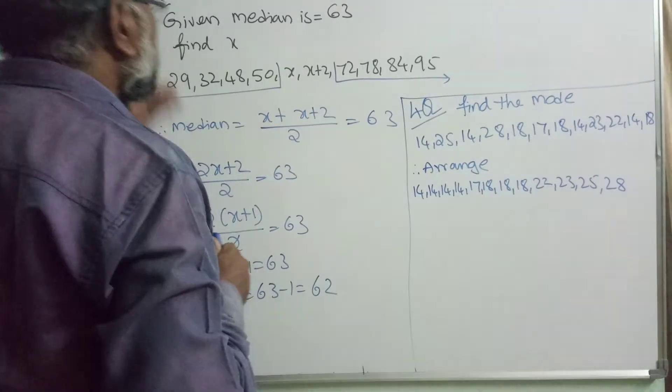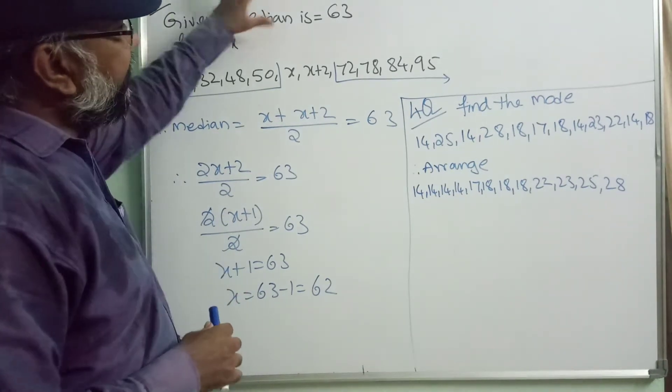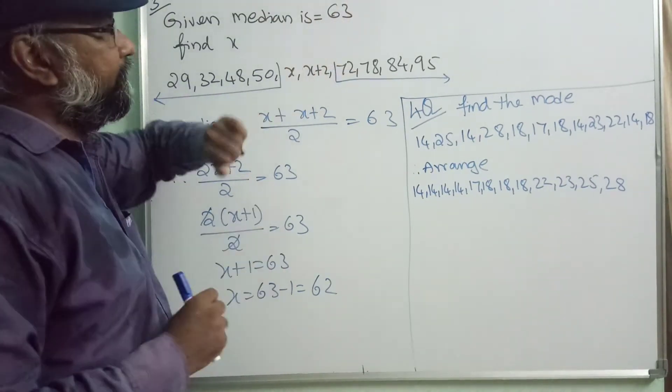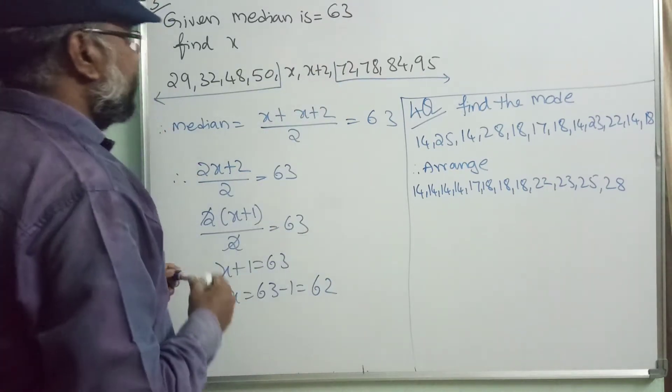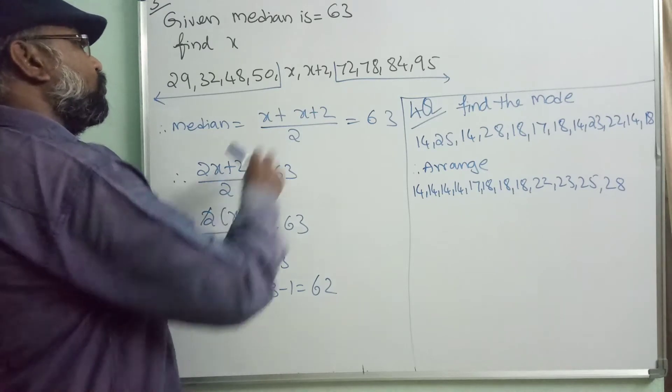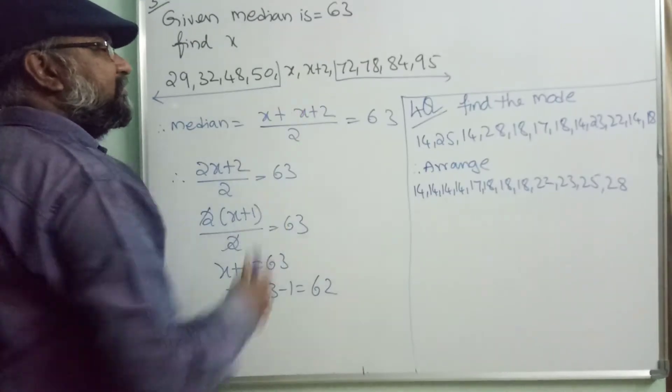Hello students, this is the third question. Here, median is given for a data, that is 63, but in the data observations, two numbers were missed and replaced with x.